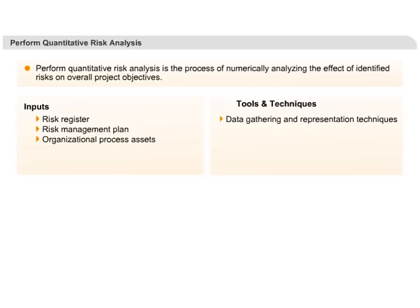For example, using Monte Carlo analysis, you can check if the project is executed 100 times, what is the probability of completing the project on a specific date. Similar analysis can be done for risk as well. Numerical data also helps in using the decision tree concept to objectively analyse project risk and impact.